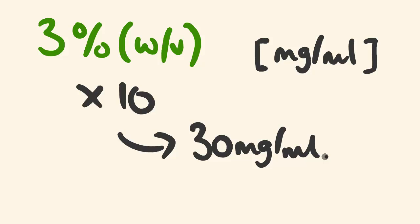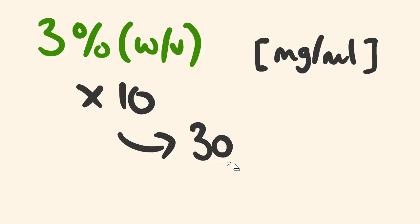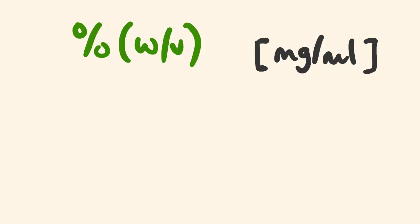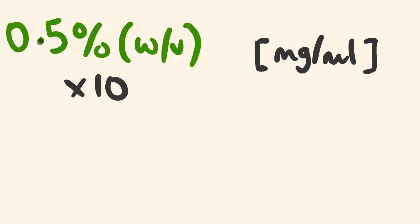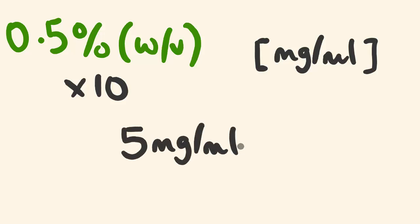Another way you could think of it is 3 grams per 100 mils. Just to give you one more example: say the active ingredient was 0.5% W/V — what's this in milligrams per mil? We multiply it by 10: 0.5 times 10 gives 5 milligrams per mil of the active ingredient.